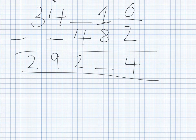1 take away 8 we can't do, so we would have to exchange to put the 1 here. 11 take away 8 is 3, 2 add 4 is 6, but we add the 1 that we exchanged to make 7.